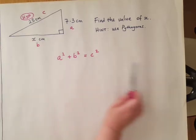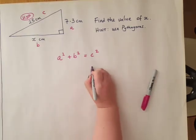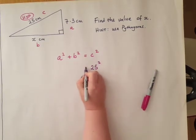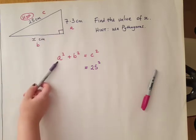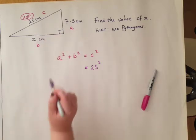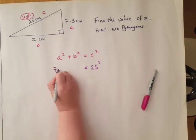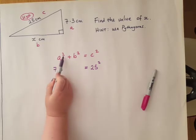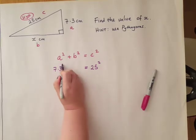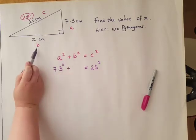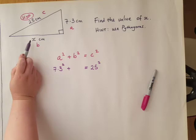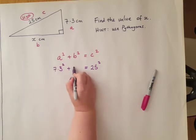The 7.3 is a, so I'm going to write that underneath the a, remembering to put squared. And now the b, we don't know what that is, but we've labeled it as letter x, so I'm going to write letter x like that.